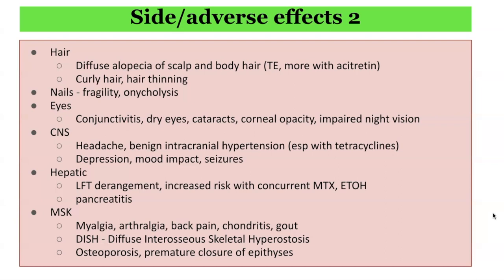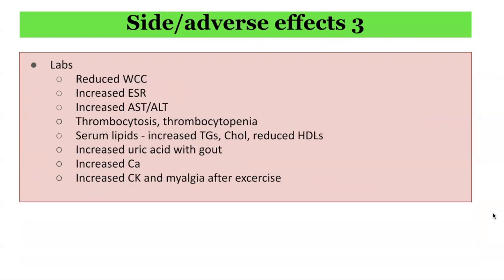Laboratory impacts of oral retinoids include reduced white cell count, increased inflammatory markers such as ESR, increased liver function tests including transaminitis with raised AST and ALT, thrombocytosis or thrombocytopenia, increased lipids — particularly triglycerides — but also increased cholesterol and reduced HDL, increased uric acid with gout, increased calcium, and increased creatinine kinase with myalgia particularly after exercise.